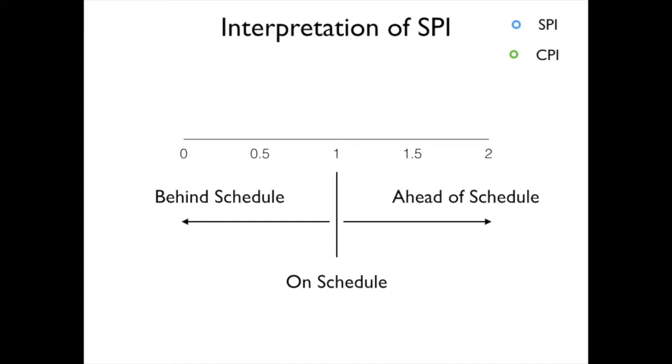We interpret this index very much the same way as we did with CPI. If we have a value that is less than 1, we say that we are behind schedule. If we have a value of 1, we say that we're on schedule. And if we have a value greater than 1, we say that we are ahead of schedule.